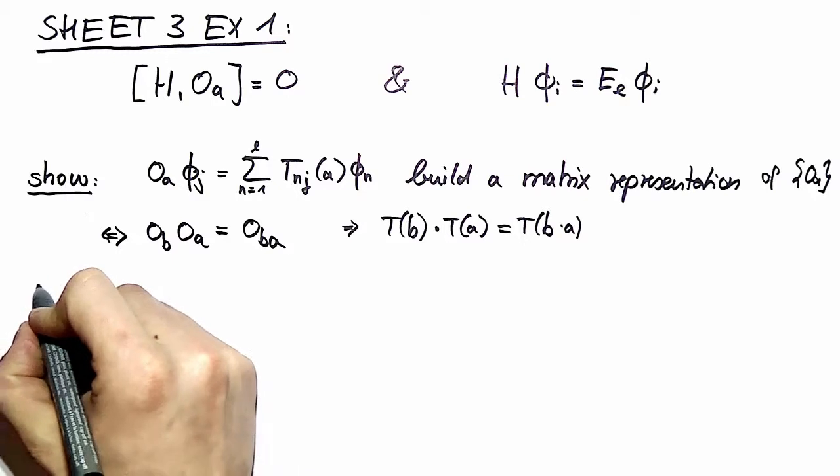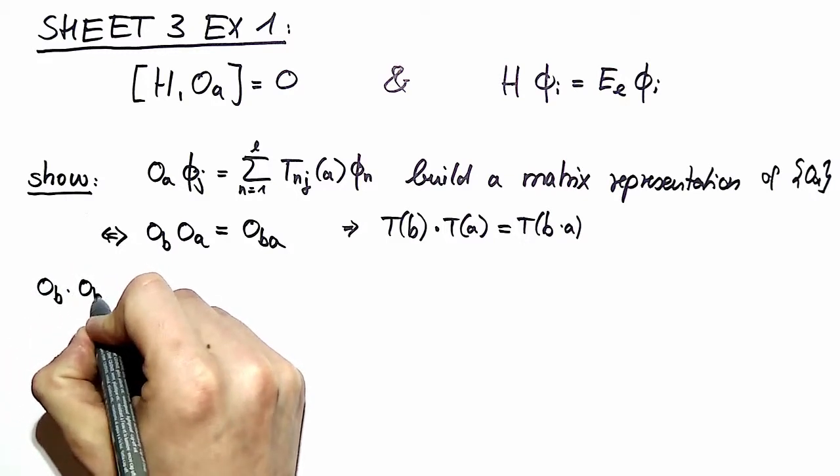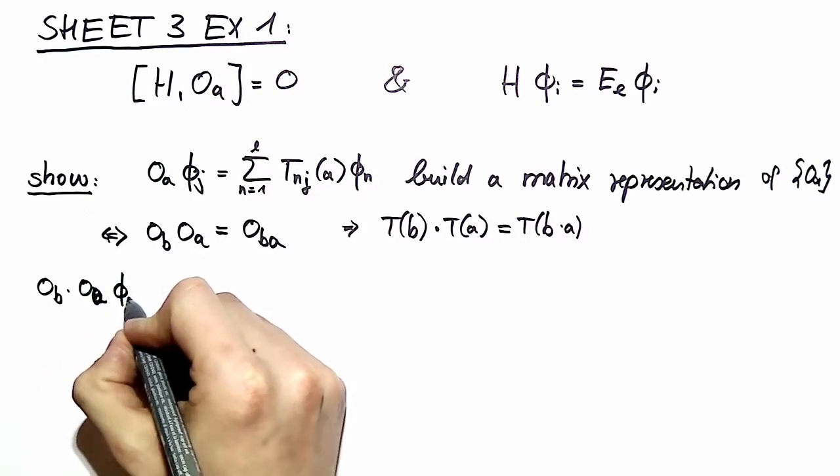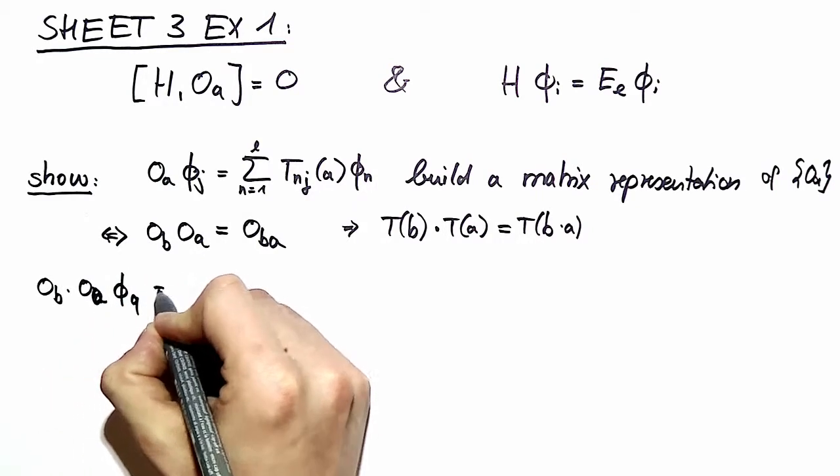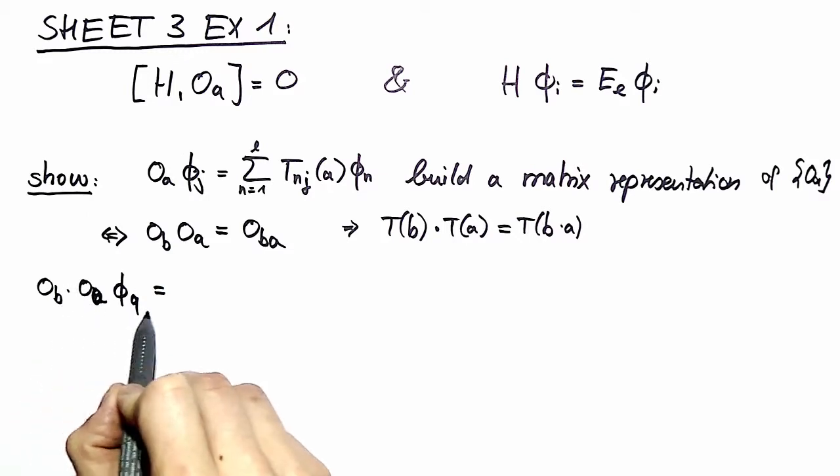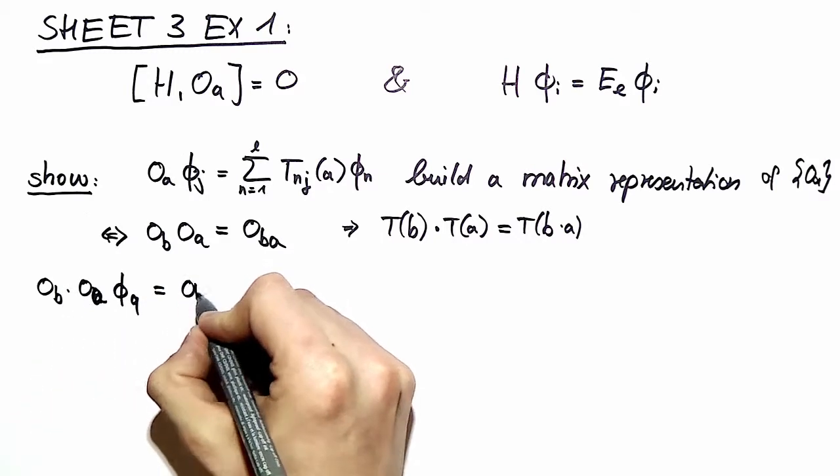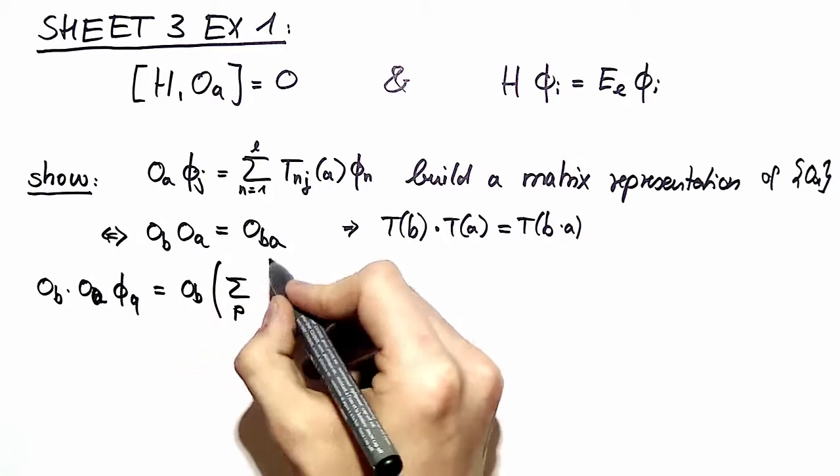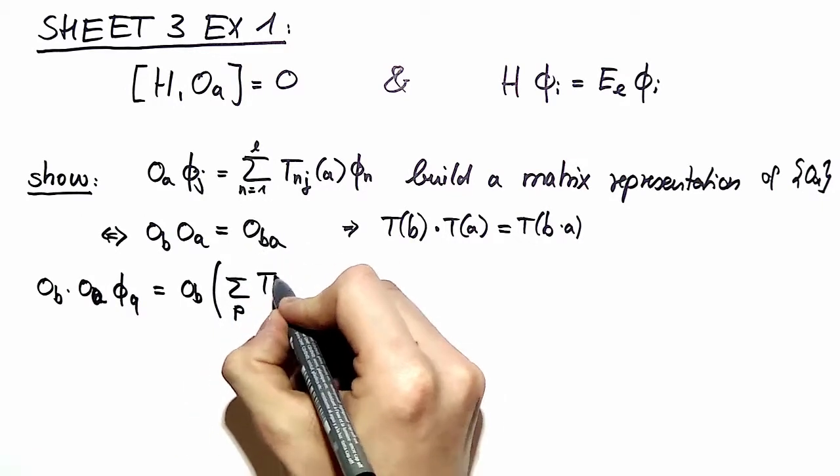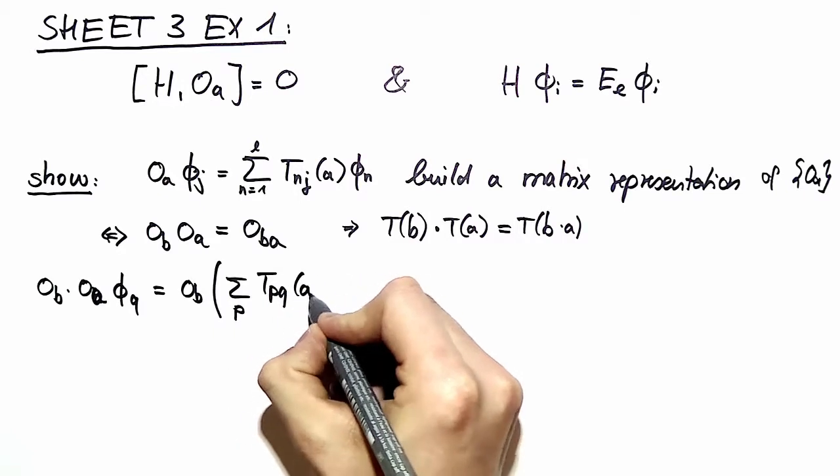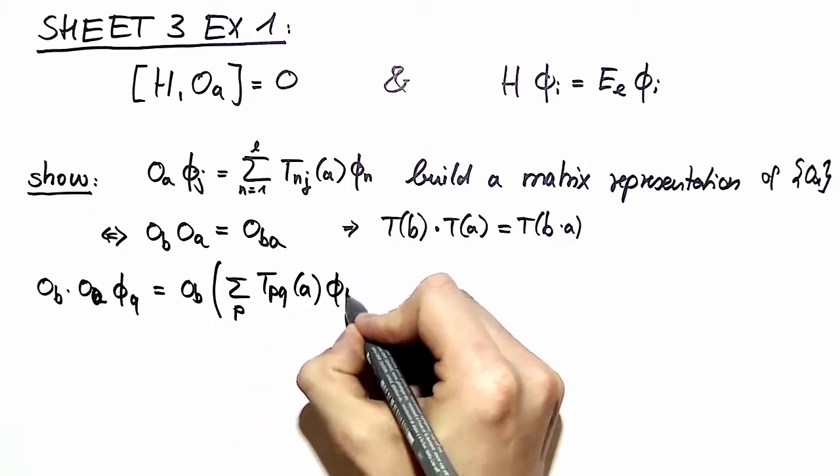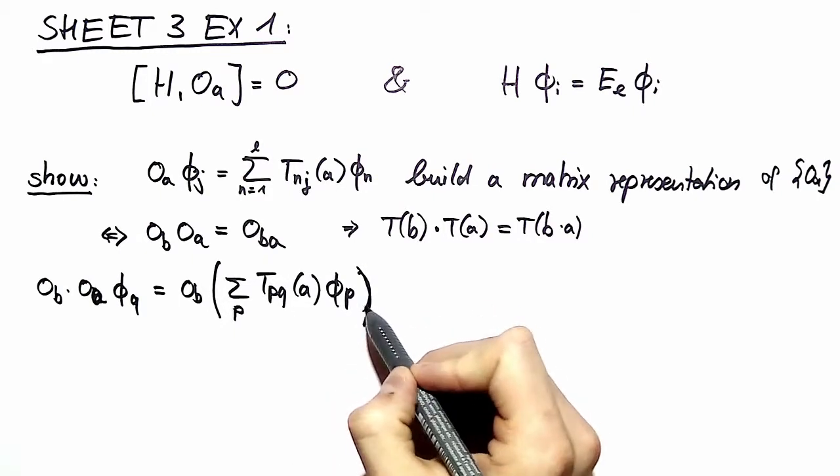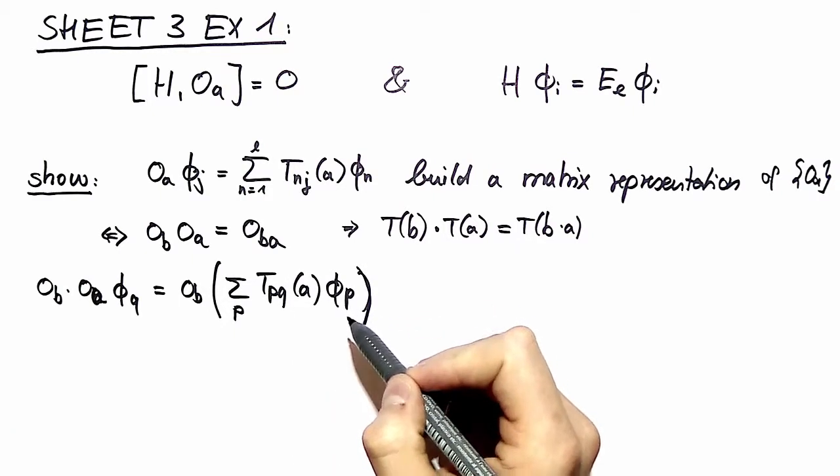So we start off by OB OA times a function in our eigenspace phi Q. Then we insert our definition right here. So we have OB, then the sum over P. P is our n right here. T PQ A phi P. So we have done nothing else than just inserting the definitions and changing our indices a bit.